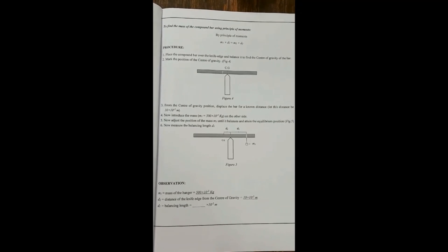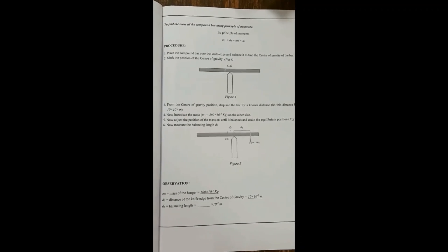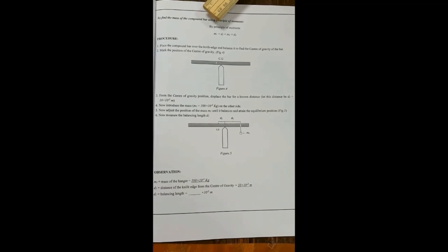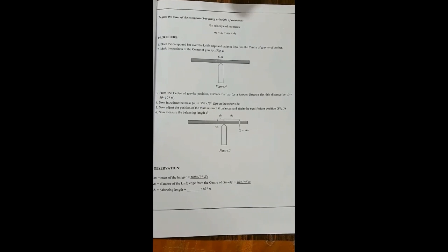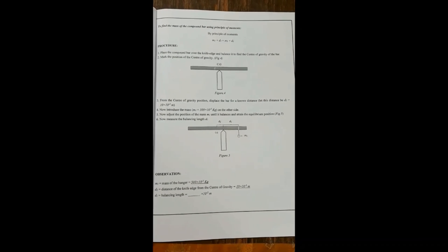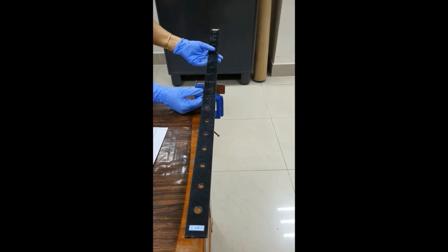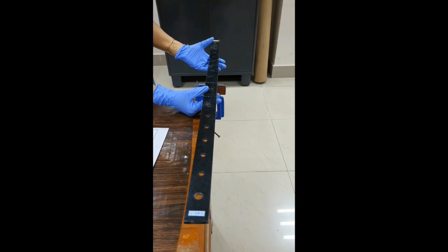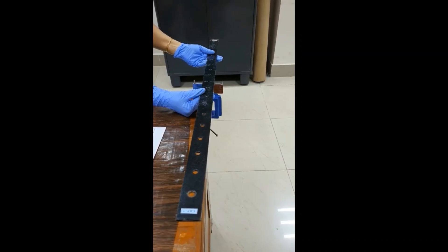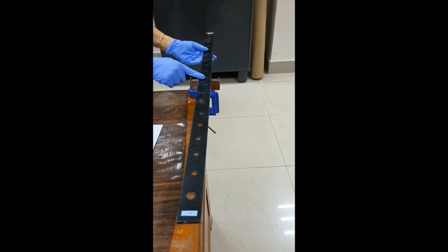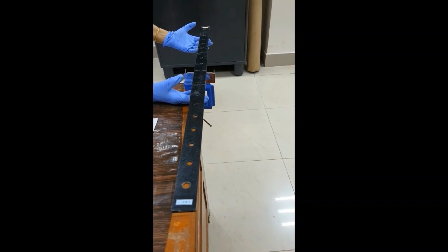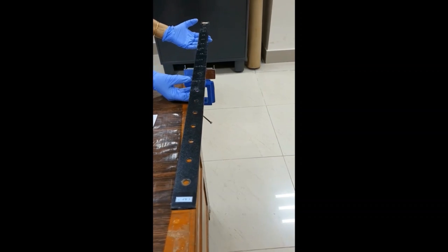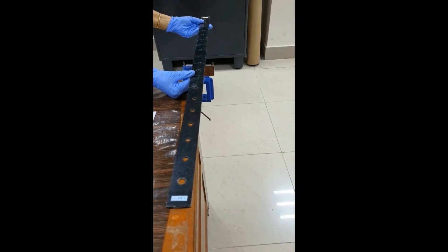Next, we are going to find the mass of the compound bar pendulum using the principle of moments. By the principle of moments, M1 × D1 = M2 × D2. First of all, balance the compound bar pendulum on a knife edge. I have kept the 10th hole on the knife edge, and you can see the pendulum is balanced. So this 10th hole is the center of gravity.